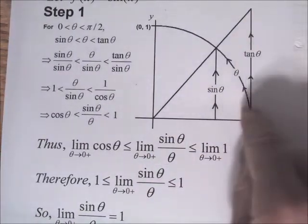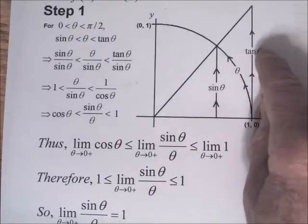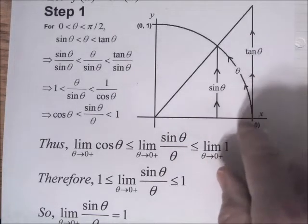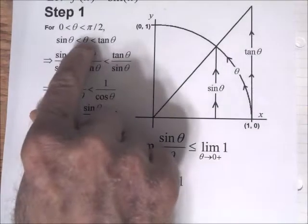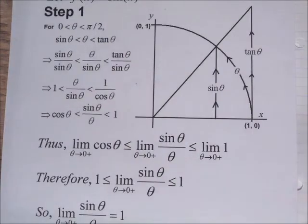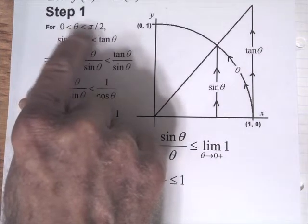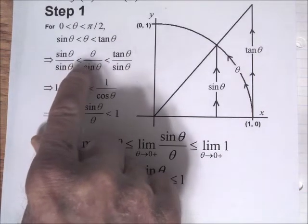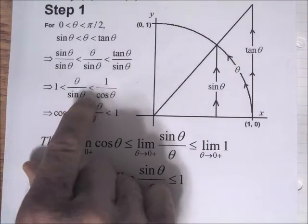The tangent theta is sine over cosine. This larger triangle has the same angle theta and the same tangent. So sine over cosine is the tangent, which is the same as tangent over 1. As suggested by the diagram, sine theta < theta < tangent theta. Dividing everything by sine — since sine is positive for theta in (0, π/2) — we get 1 < θ/sin θ < 1/cos θ.